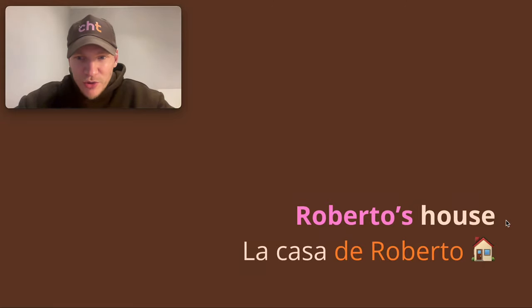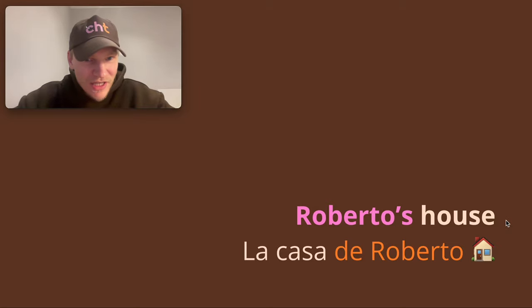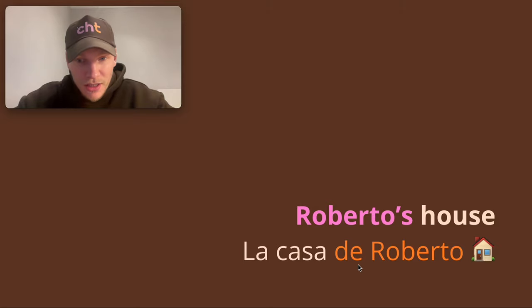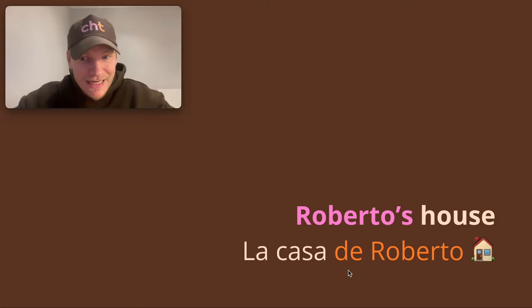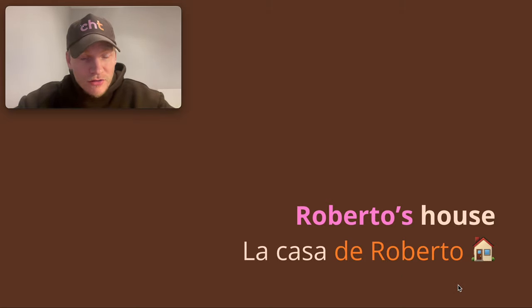Roberto's house — in Spanish they don't really have an apostrophe-s. If you want to say 'Roberto's house' you have to say 'la casa de Roberto' — 'of Roberto.' See, there's no s here, there's no apostrophe. So 'el libro de María' means 'María's book.' You're always going to have the noun, then 'de,' then the name of the person.